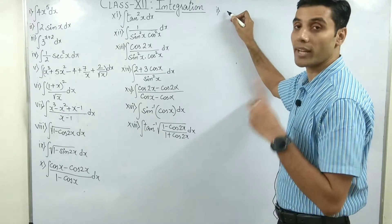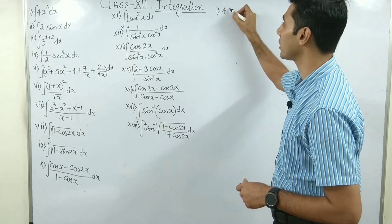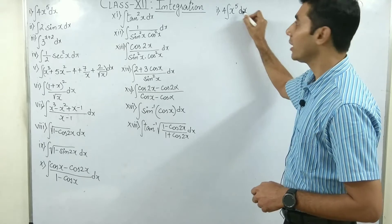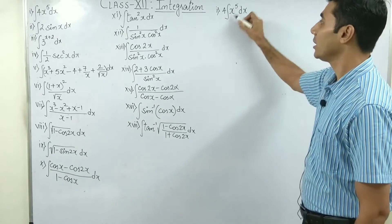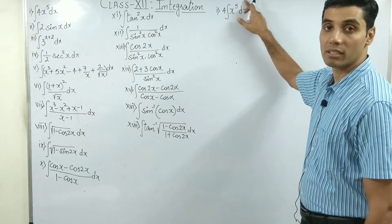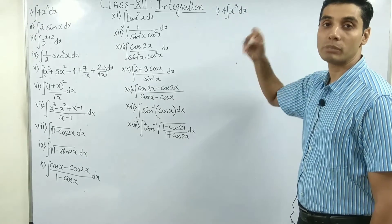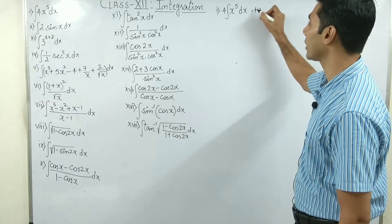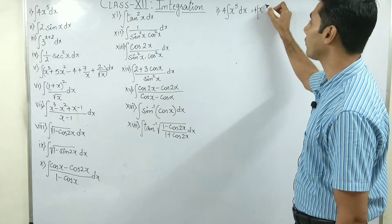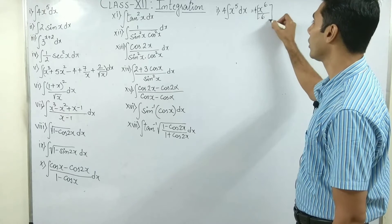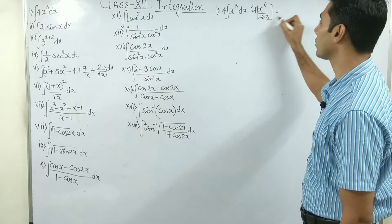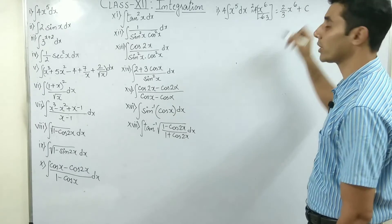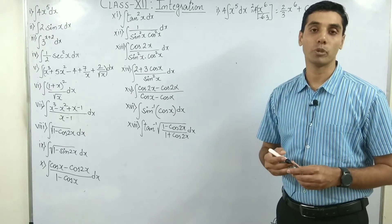Since we are integrating 4x to the power 5, 4 is a constant so let us take it outside. Using the formula: integration of x to the power n is x to the power n plus 1 upon n plus 1. So we get 4 times x to the power 6 upon 6, which equals 2/3 x to the power 6 plus c. Here c is a constant which you always need to put in integration.